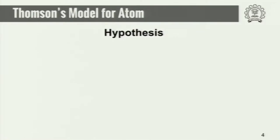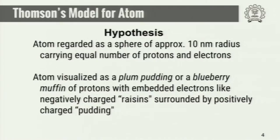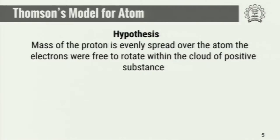One of the first models of atomic structure was proposed by Thomson. He assumed that atoms are spheres of approximately 10 nanometer radius. This is known as the plum pudding or blueberry muffin model — where the electrons are suspended in a mass of protons, like raisins in a muffin. The hypothesis was that the mass of protons is evenly spread over the atom, and electrons are free to rotate within this cloud of positive substance.